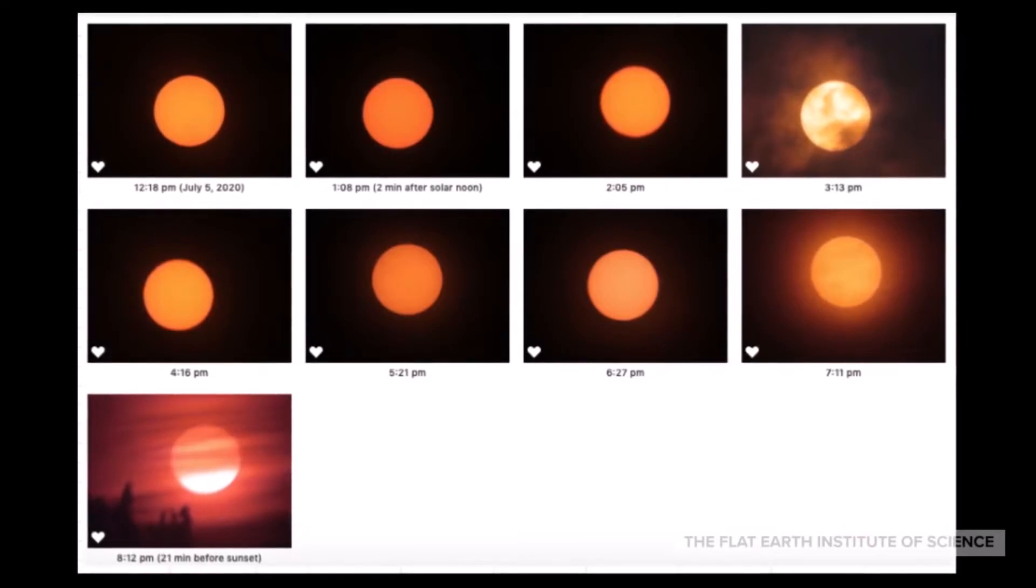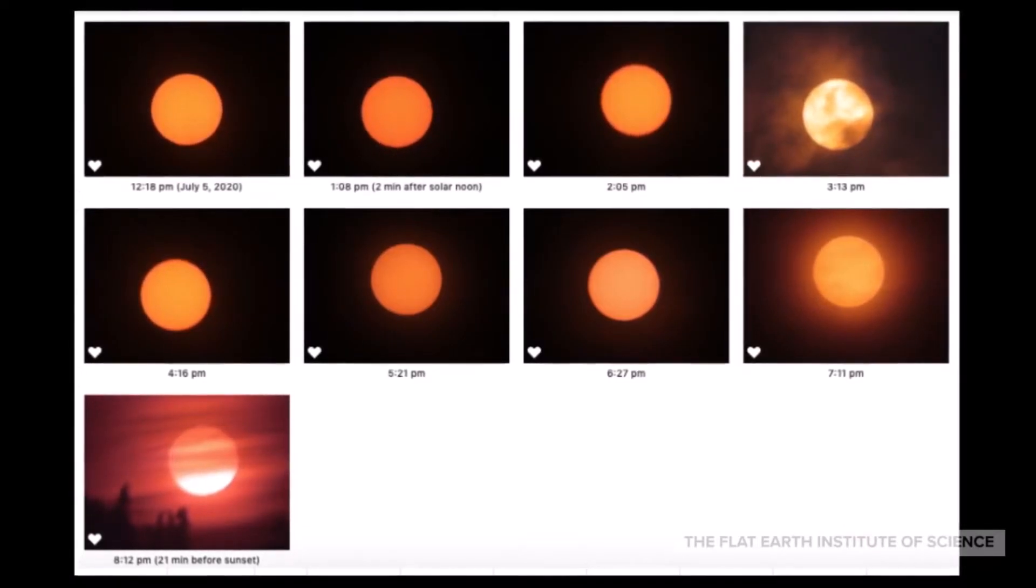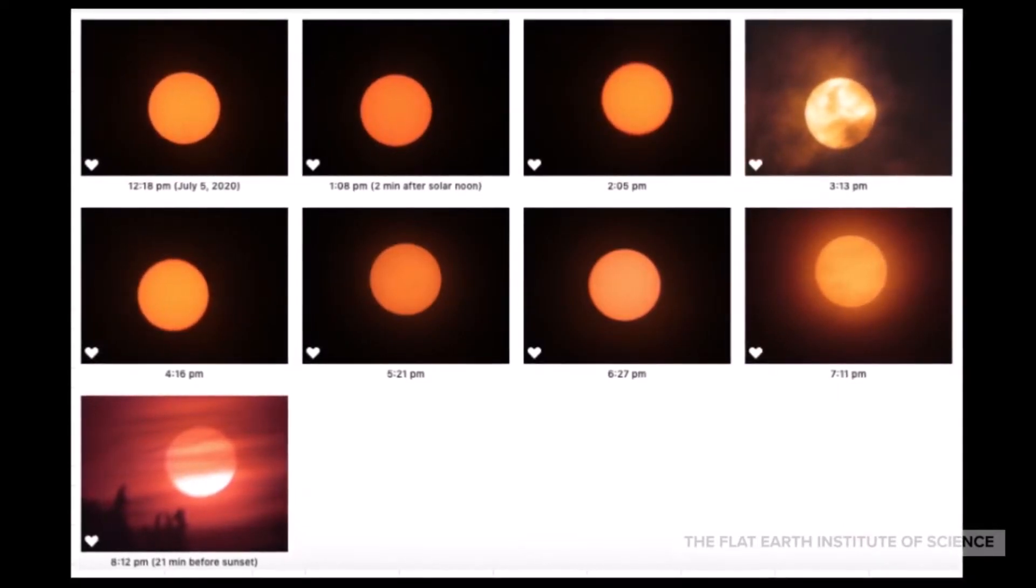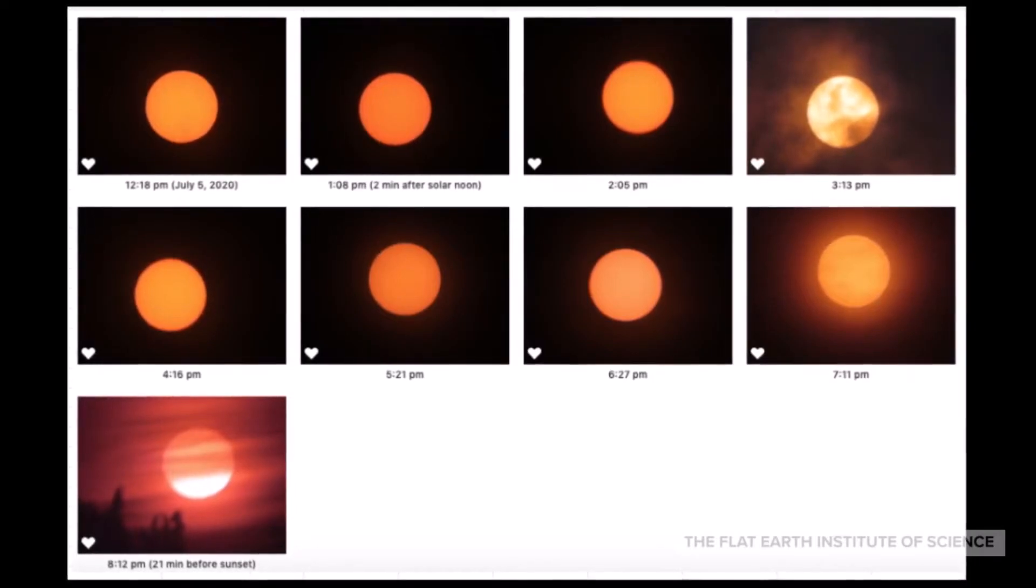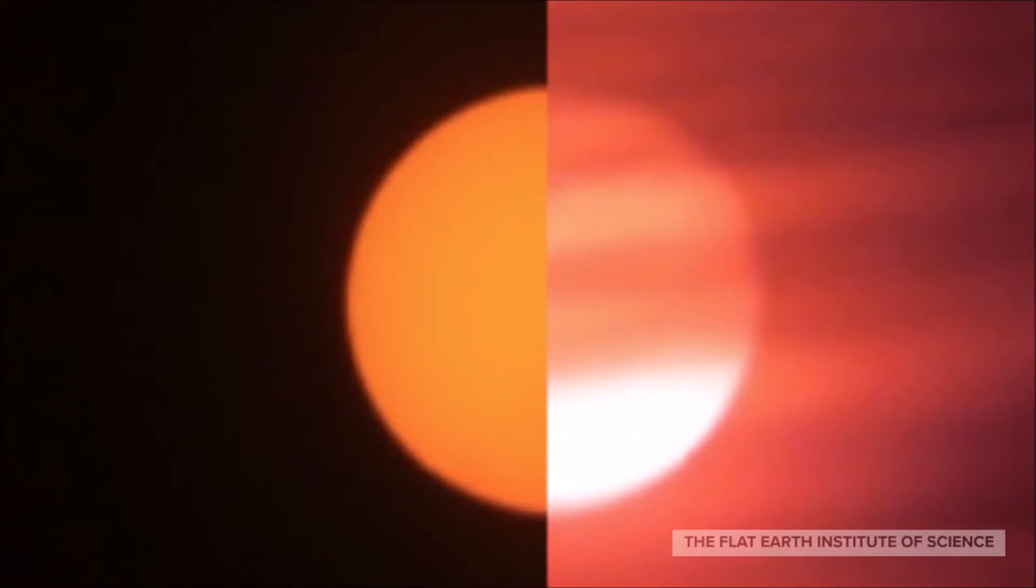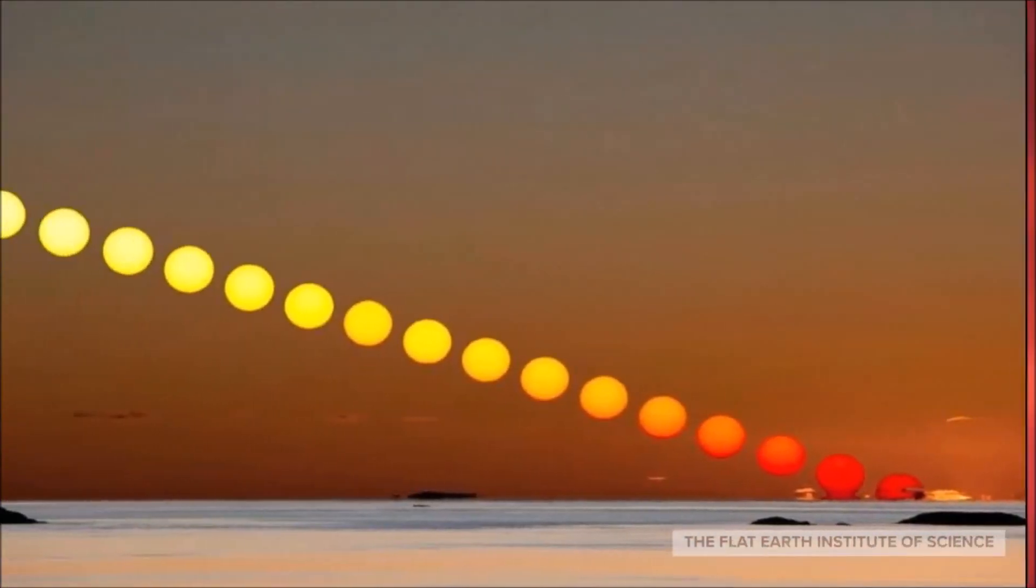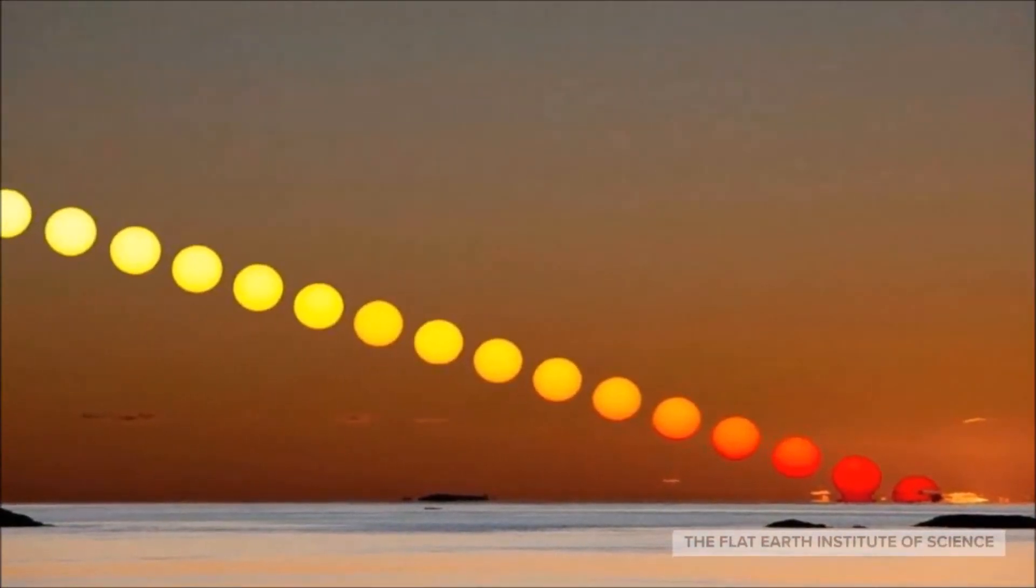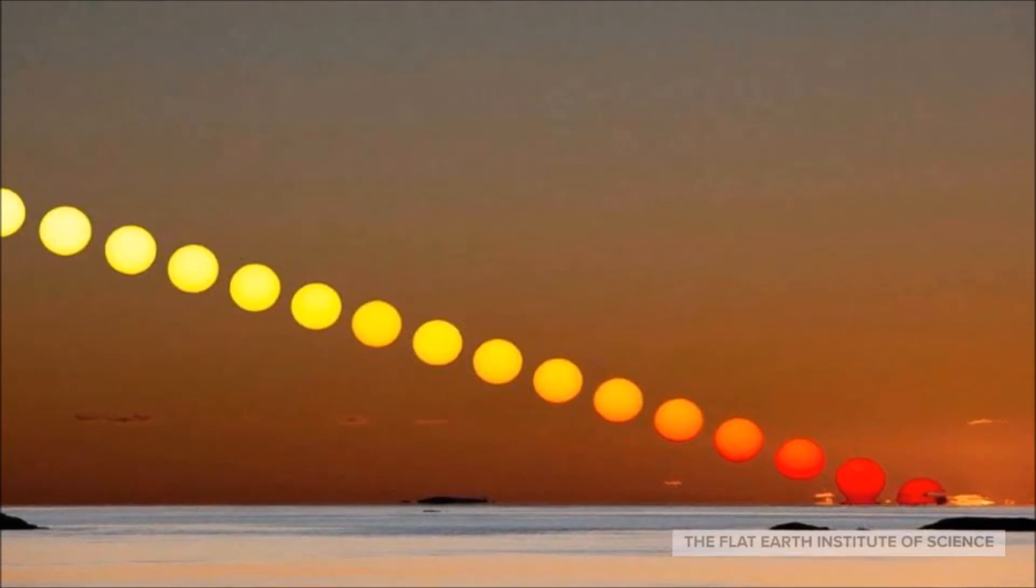In a recent interview, our guest, Flat Earth Math, provided an observation of the sun not appearing to shrink as it traveled across the sky. Here you can see his photo at noon, lined up against his photo 21 minutes before sunset, wherein you can see that the sun appears to be the same size in both photos. Many people have observed this, both with and without a solar filter.